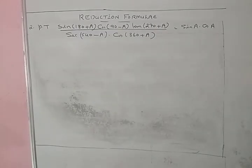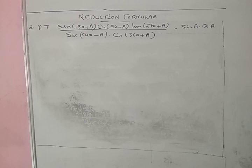Second problem: prove that sin(180 + A) times cos(90 - A) times tan(270 + A) divided by sec(540 - A) times cos(360 + A) is equal to sin A cos A. We know that sin(180 + A) = minus sin A, and cos(90 - A) = sin A.